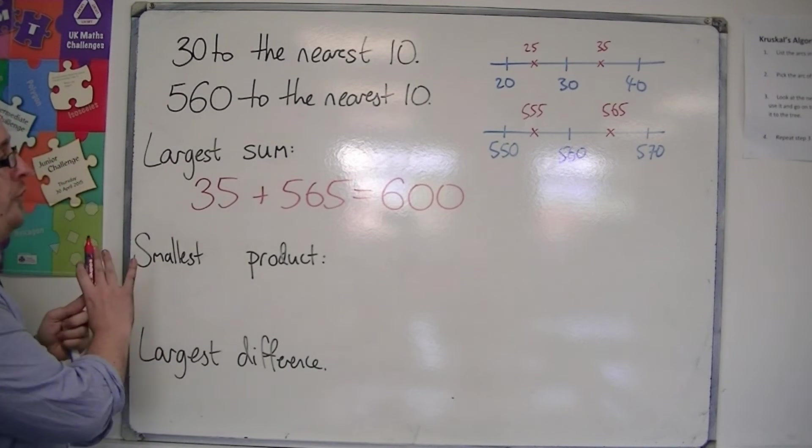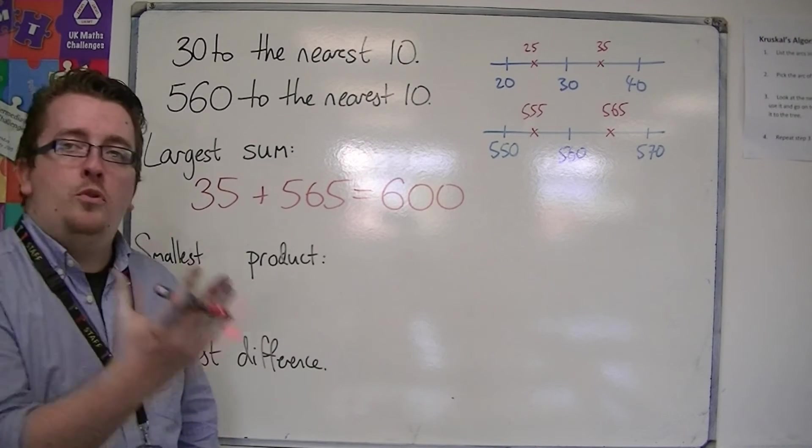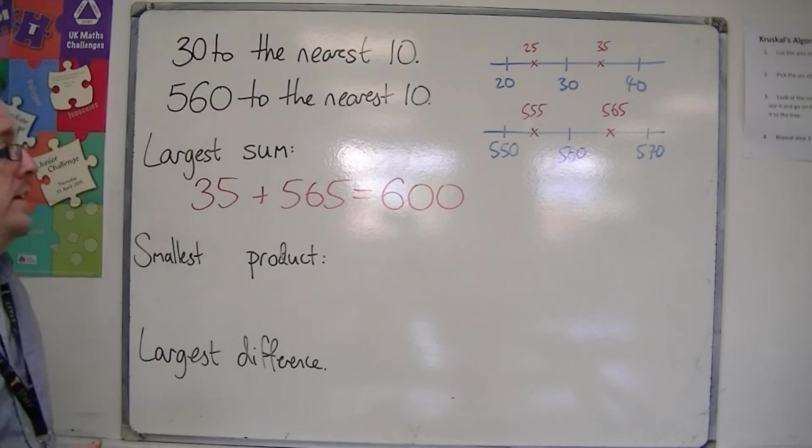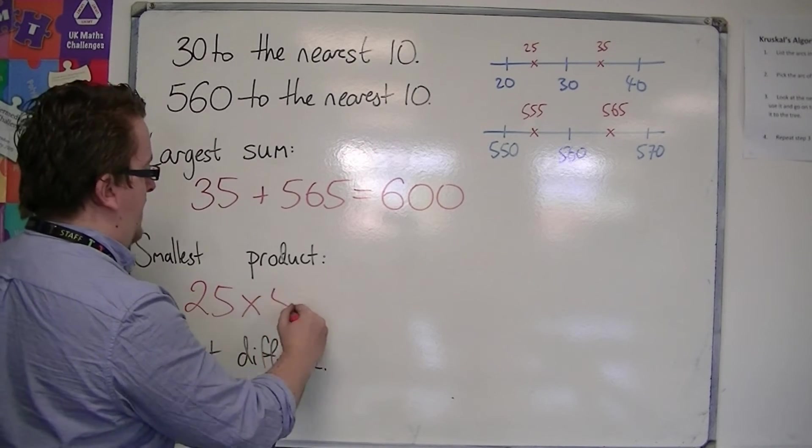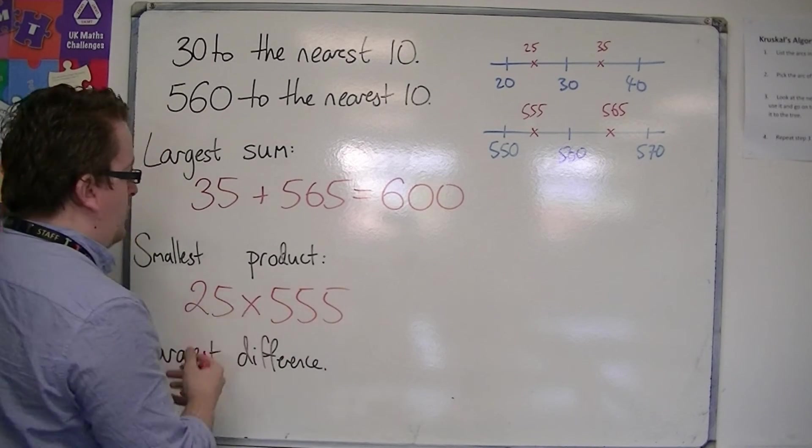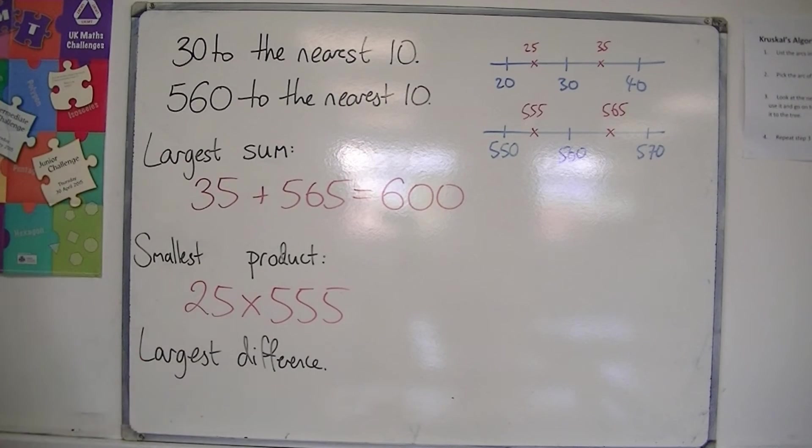If you're looking for the smallest product, product means multiplying them together. And the smallest product is going to come from multiplying the two smaller numbers together. So we've got 25 and 555.